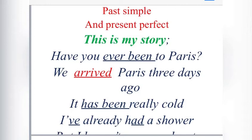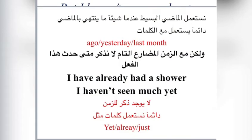Past simple and present perfect. Here is a story: 'We arrived in Paris three days ago. It has been really cold. I have already had a shower, but I haven't seen much yet.' We use the past simple when something is finished in the past, with words like ago, yesterday, last month. With the present perfect, we don't mention when — we use words like yet, just, and already.